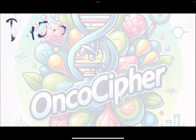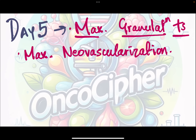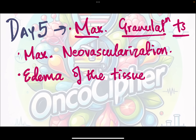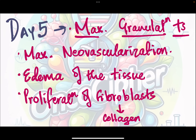On day five, there is maximum granulation tissue and maximum neovascularization. There is also a lot of edema of the tissue because all these new vessels are leaky and allow the passage of plasma proteins and fluid into the extravascular space. Finally, there is proliferation of fibroblasts which starts laying down the collagen. So on day five: maximum granulation tissue, maximum blood vessel formation, maximum edema, and proliferation of fibroblasts.